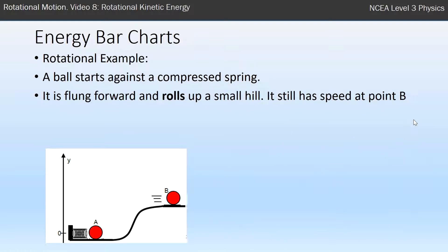Right, let's look at a rotational example. This is the same situation, except here we have a ball started against a compressed spring. It's flung forward and it rolls up a small hill. So it doesn't slide, it rolls. It still has speed at point B. Again, let's assume that no energy is lost to heat. So the same thing, the spring is compressed, it has five units of energy.